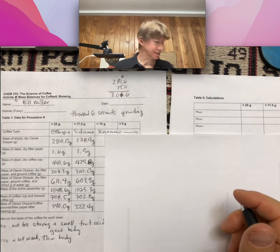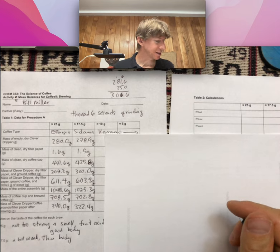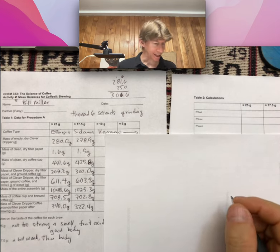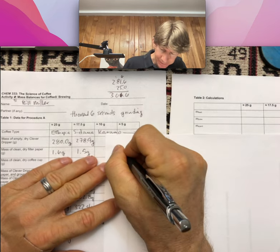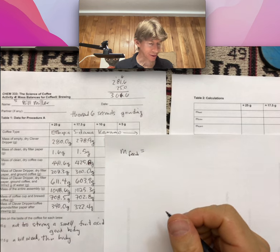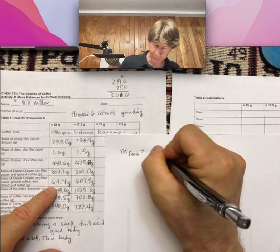Now let's run through some calculations. The first calculation is to calculate M_feed, the mass of water used to make the coffee. To do that, M_feed is going to equal mass of clever dripper, dry filter paper, ground coffee, and your water, so that's going to be 611.4 for me.